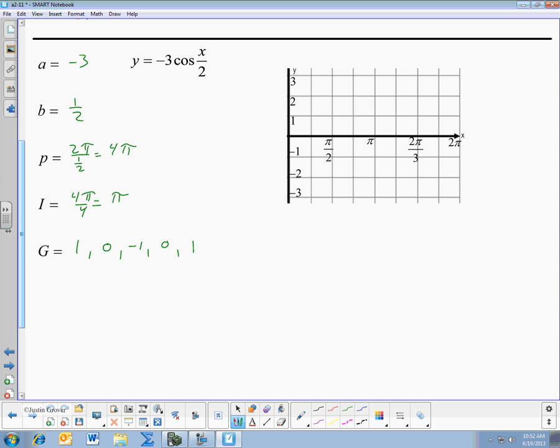But then, remember, we have to multiply these by your A. So, that's going to be negative 3, 0, positive 3, 0, negative 3. Remember, multiplying by a negative changes the sign. When you multiply it by 0, it just stays 0.